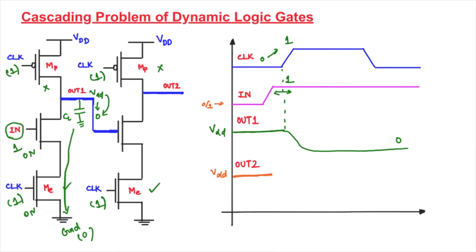Now let us concentrate on the second inverter. The second inverter's input should be 0, because out 1 has discharged from 1 to 0. This 0 is passed to the NMOS transistor of the second inverter. Since NMOS turns on only for a high input, it will not turn on. Therefore, out 2 should retain its pre-charged value VDD. But what actually happens instead of retaining VDD?